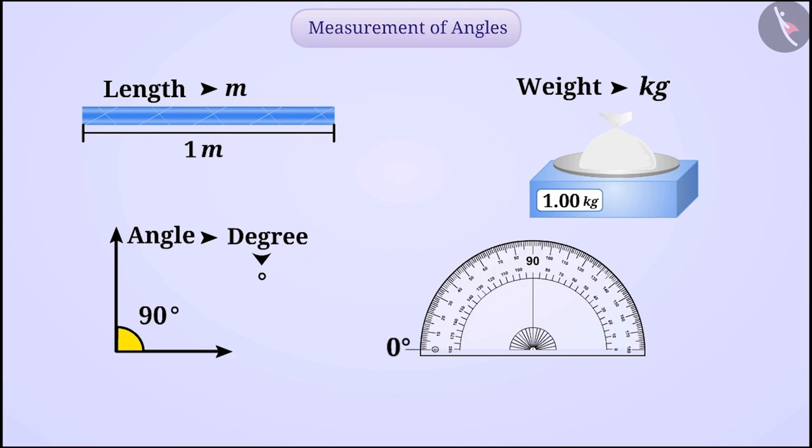Using the protractor, we can measure 0 degrees to 180 degrees. So, let's find out how to measure an angle.